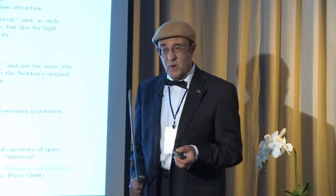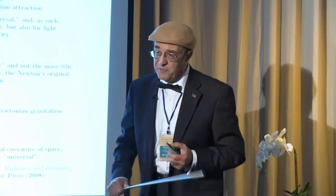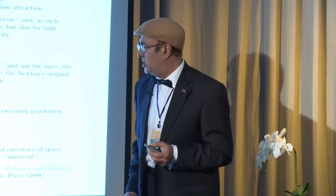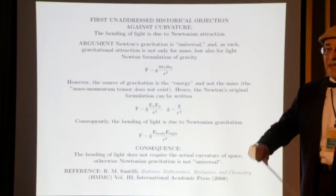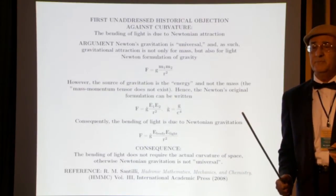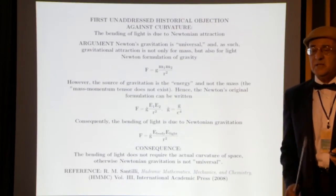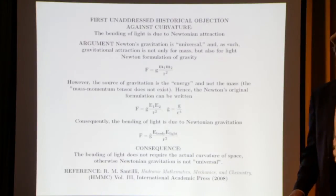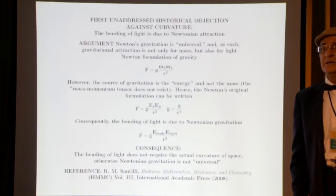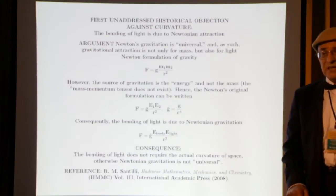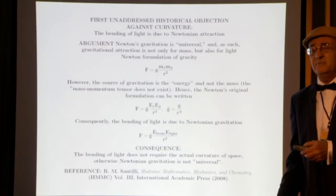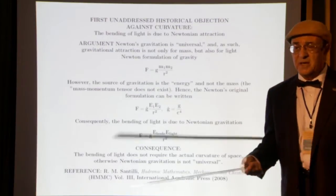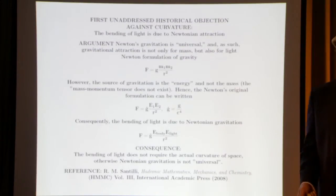It is well known by experts that the origin of the gravitational field is the energy and not the mass — specifically the energy-momentum tensor. Indeed, there is no mass momentum tensor; it doesn't exist. What exists is the energy-momentum tensor, and that is the source of the gravitational fields in any decent level of treatment.